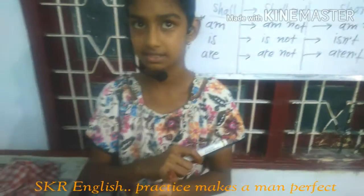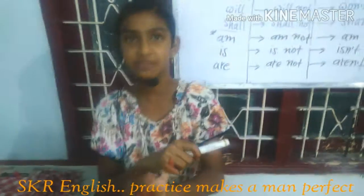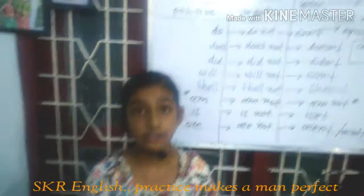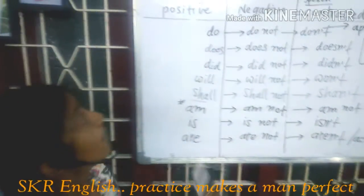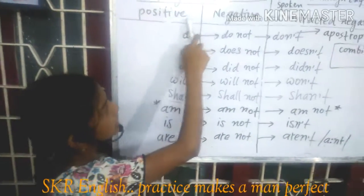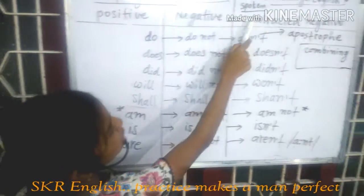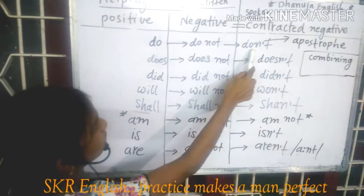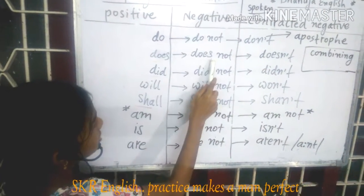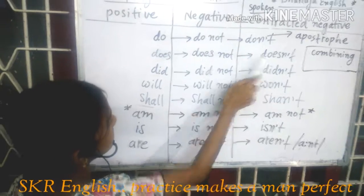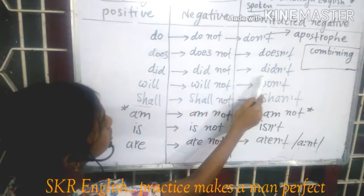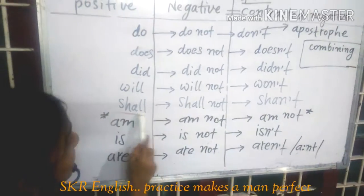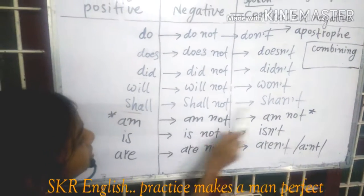I would now like to teach helping verbs in positive, negative, and contracted negative forms. Do — do not — don't. Does — does not — doesn't. Did — did not — didn't. Will — will not — won't. Shall — shall not — shan't.